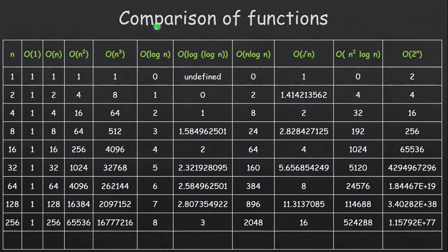Finally, here is a comparison of standard functions: O(1), O(n), O(n²), O(n³), O(log n), O(log log n), O(n log n), O(√n), O(n² log n), and O(2ⁿ). This table helps understand which function is greater than which. From the table it is clear that 2ⁿ is the largest function. This chart is only for comparison purposes of standard functions. The remaining topics will be discussed later.